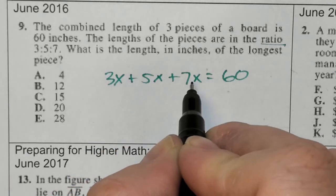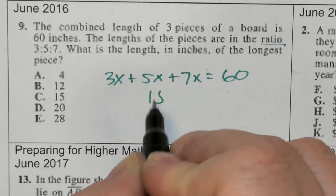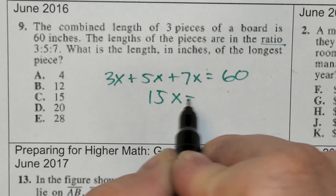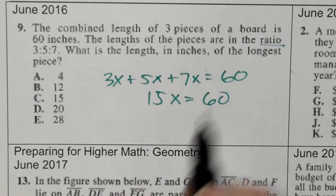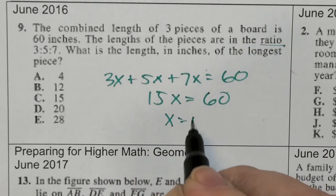Combining terms: 3 and 5 is 7, 7 and 8 is 15, so I have 15x equals 60. Divide by 15, x equals 4.